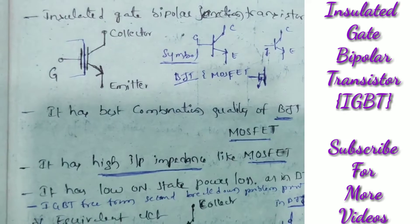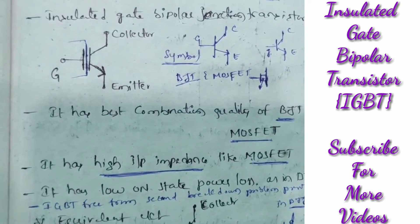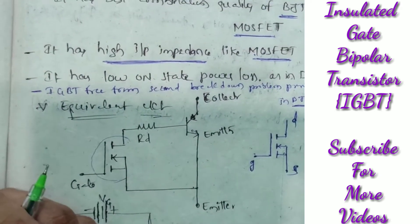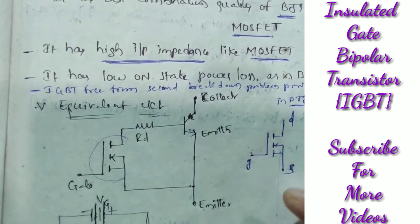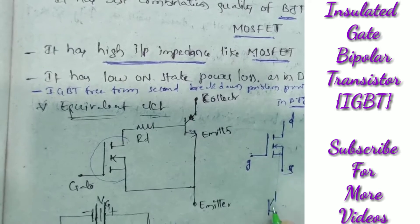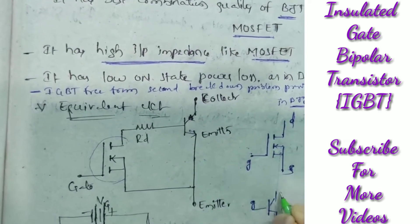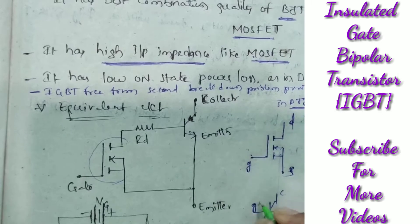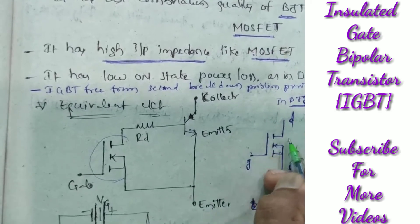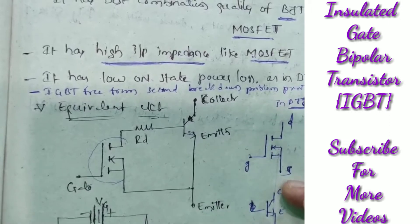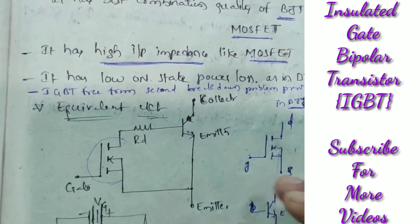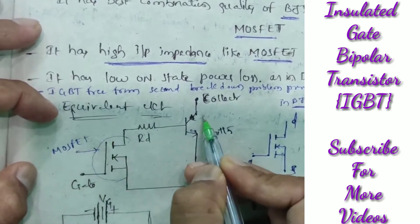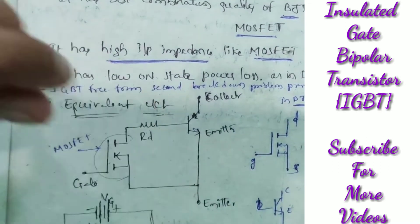This is about the advantages of IGBT. Coming to the equivalent circuit — when you draw the equivalent circuit, you need to know the symbols for the MOSFET and the transistor. This is gate, collector, and emitter. The MOSFET symbol is connected to the BJT, that is the transistor. MOSFET is connected to the transistor at collector and emitter. This is about the equivalent circuit.